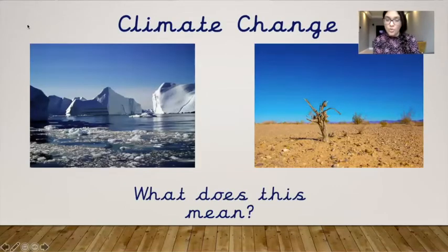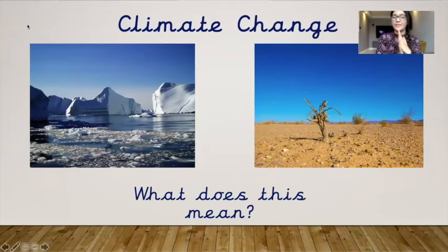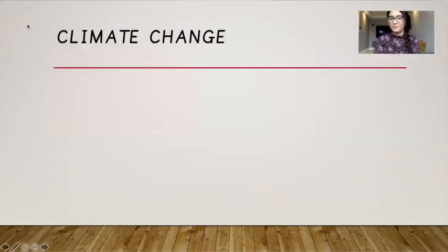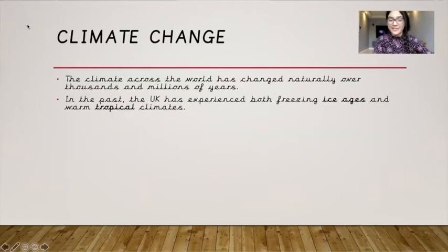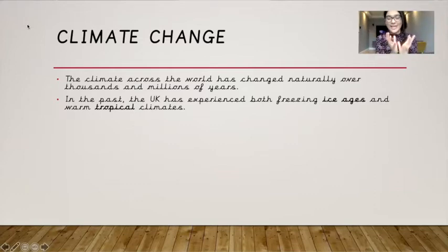Climate change — what does this mean? The climate across the world has changed naturally over thousands and millions of years. In the past, the UK has experienced both freezing ice ages and warm tropical climates. An ice age is when it's super cold, and a tropical climate is when it can be quite warm but also quite rainy.